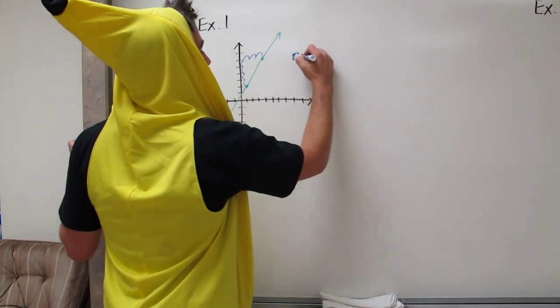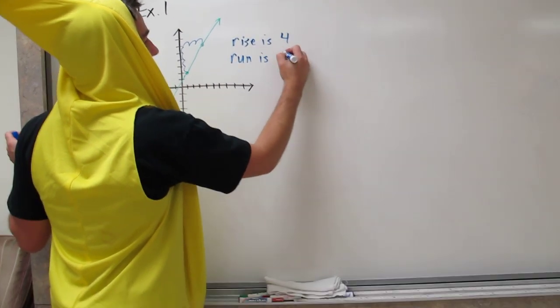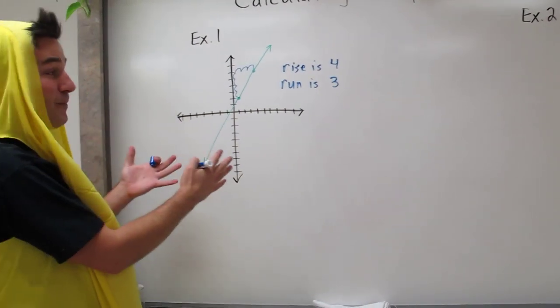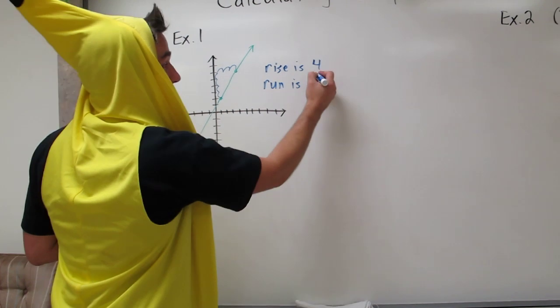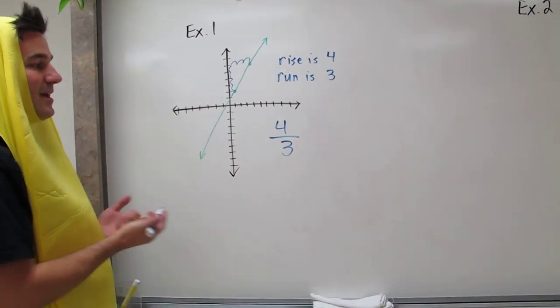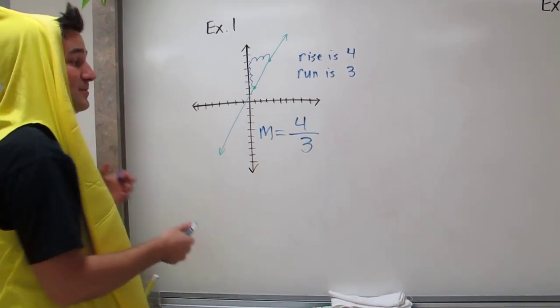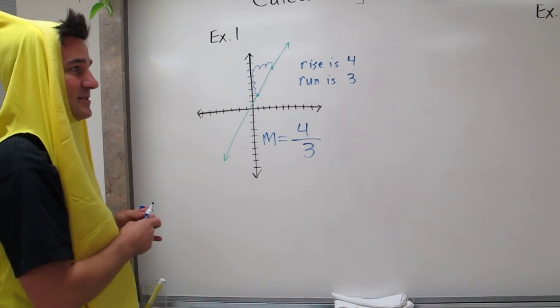So we say our rise is 4 and our run is 3. The slope of this line is actually 4 over 3, and slope is often abbreviated with an M. So we say M equals positive 4 thirds for this line.